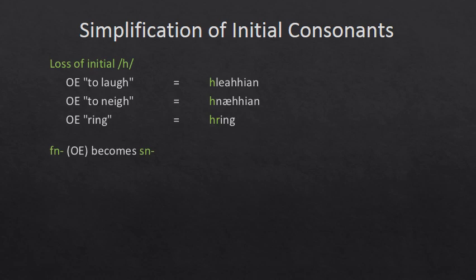This one is not exactly simplified, but FN becomes SN. F and S are both fricatives — F is the labiodental and S is the alveolar fricative — so a bit of the fricative moving back. For example, to sneeze started off as FNAST, which is just a whole lot more fun. So the next time you have a cold, just go FNASTION. And again, there's an animal sneeze — the snort — S-N today, F-N in Old English. FNORTION, FNORT, FNAST. So some Old English sounds turning more Modern English.